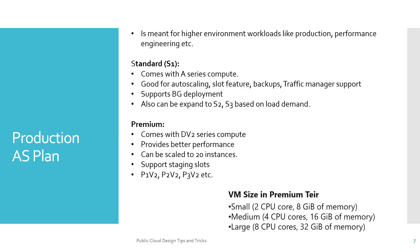The Production App Service Plan is meant for higher-environment workloads like production, performance engineering, or production-like environments. It has two flavors: Standard and Premium. Standard comes with A-series compute and is good for auto-scaling, deployment slots, backup, and traffic management — including Traffic Manager integration for load balancing. It also supports blue-green deployment and can expand to S2 and S3 with more compute resources.